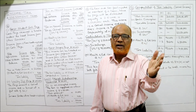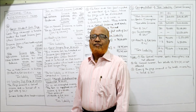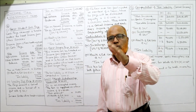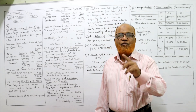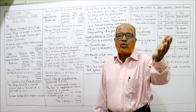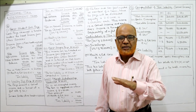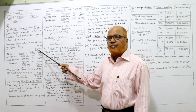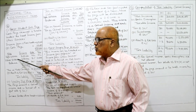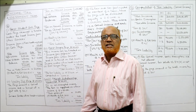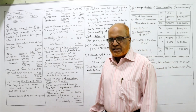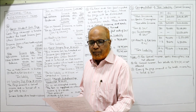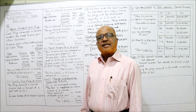Remember the slabs for a non-senior citizen: first slab up to 2,50,000 — nil; second slab 2,50,001 to 5,00,000 — 5%; third slab 5,00,001 to 10,00,000 — 20%; fourth slab above 10,00,000 — 30%. In this case our income is below 10,00,000, so only the first three slabs apply with the third slab taken as the balancing figure.